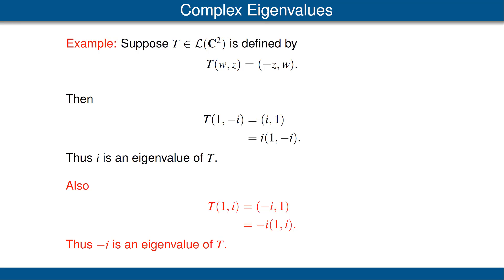You may want to pause the video and verify, using just the definition of eigenvalue, that this operator T has no eigenvalues other than i and negative i.